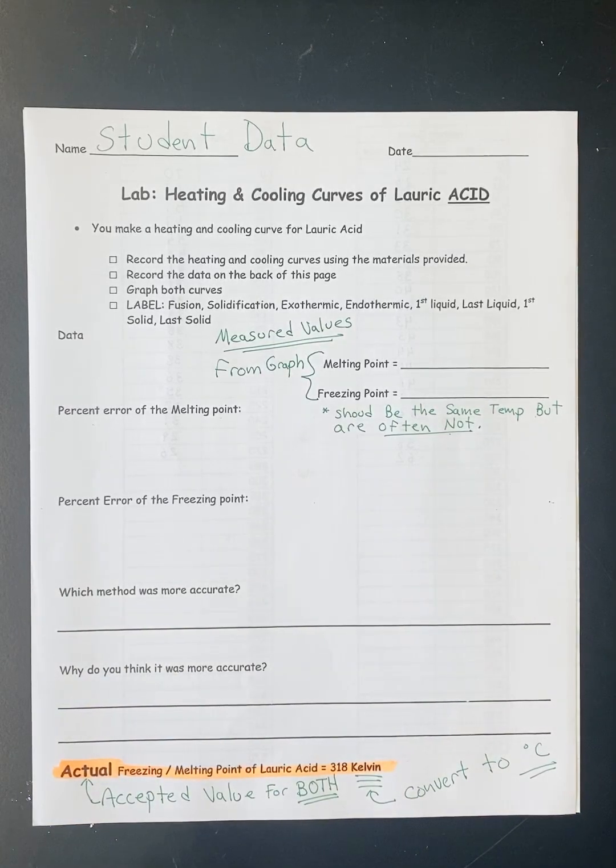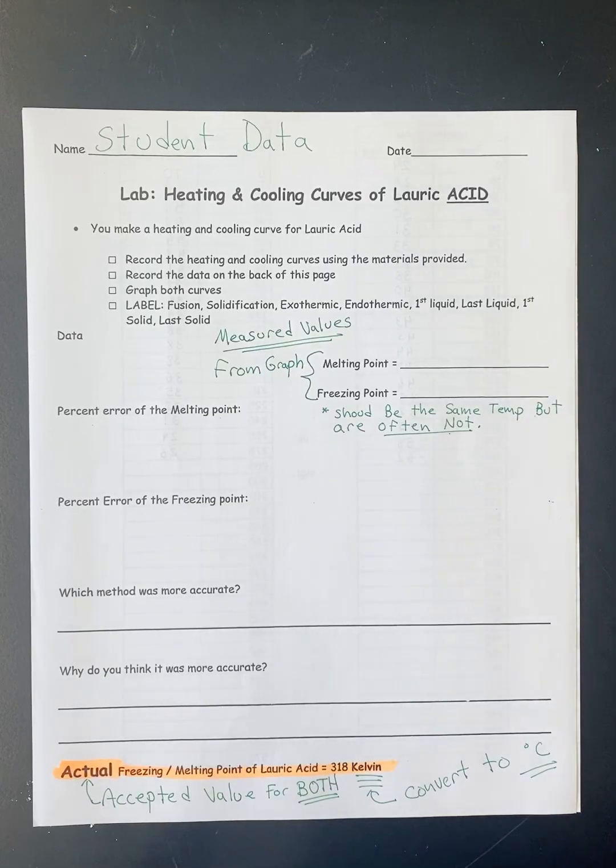Today we're going to be doing a heating cooling curve lab specifically for a chemical called lauric acid, which is actually one of the ingredients found in the original soap. I believe it's still used today but I'm not sure to what extent.